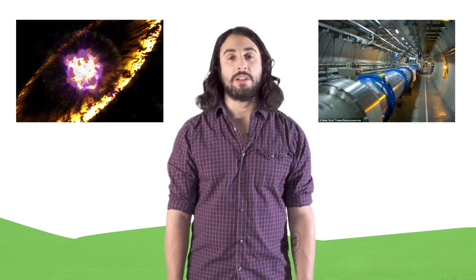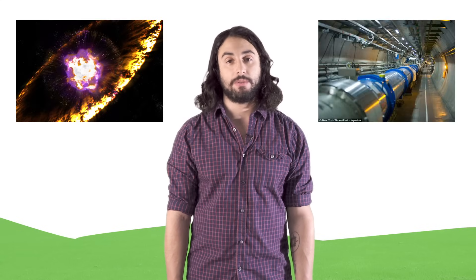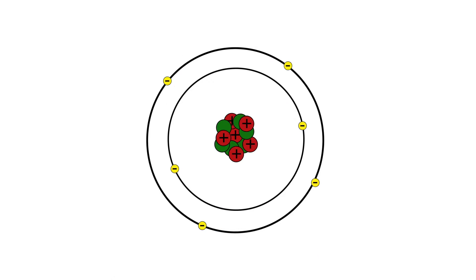Much larger ones need the immense energy of a supernova explosion or particle accelerators here on Earth. So what's so special about carbon? Let's look at the electrons. Carbon atoms have six. The first two are in the inner shell, and the other four are the so-called valence electrons in the outer shell.